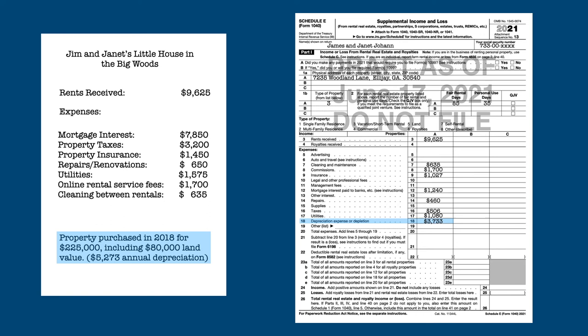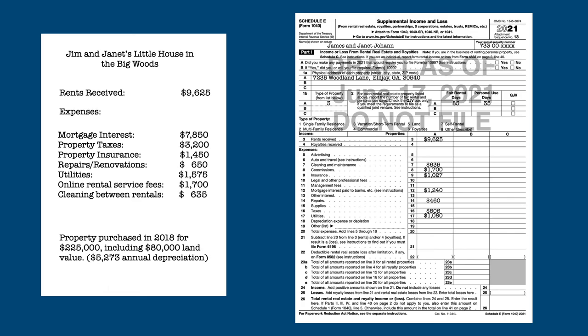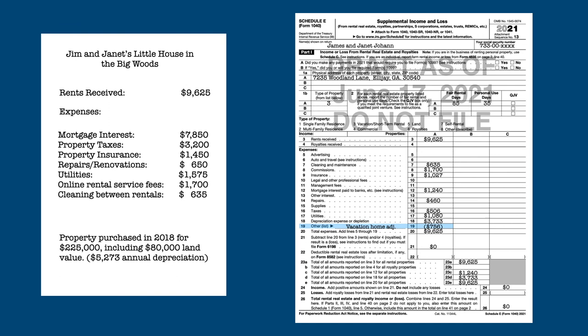Since the depreciation taken is dependent on how the property is used and that use may change from year to year, it is very important to keep track of this depreciation since it will have to be recaptured when the property is sold. And as you can see, Jim and Janet's expenses exceed the rents they received on the property. The excess expenses are listed as a negative amount on line 19 of the Schedule E and can be carried forward and applied to a future year's rental income.